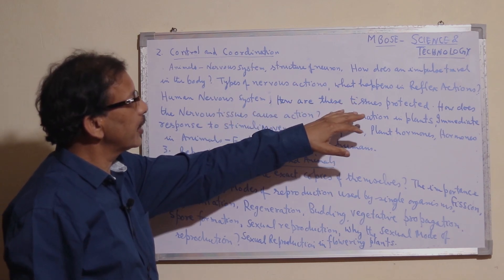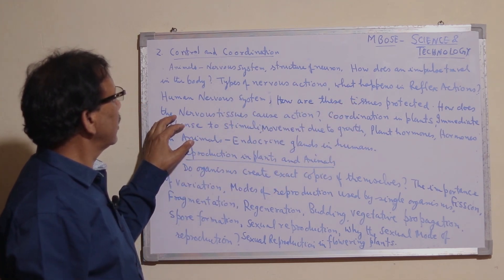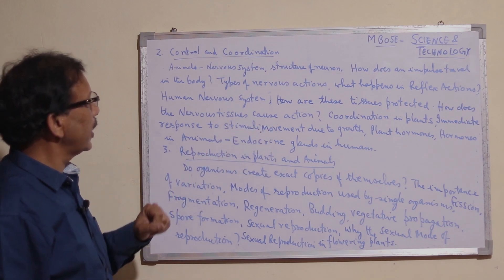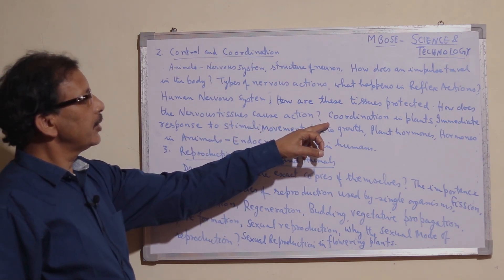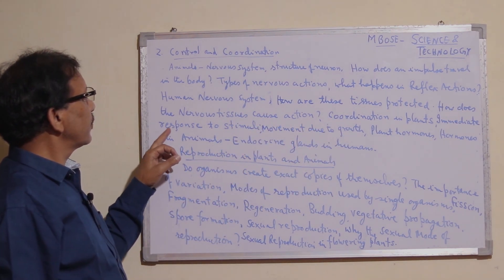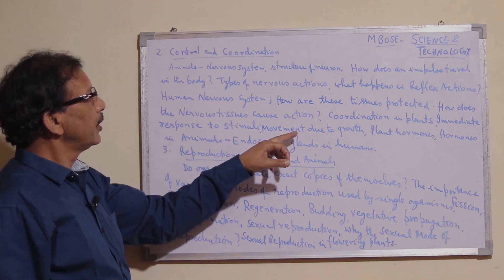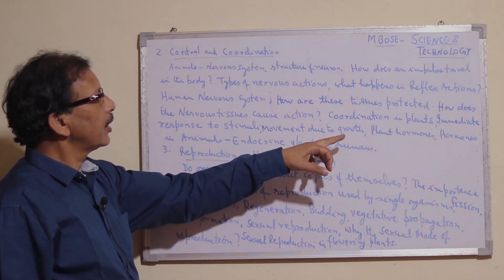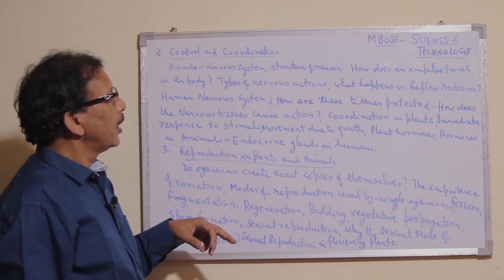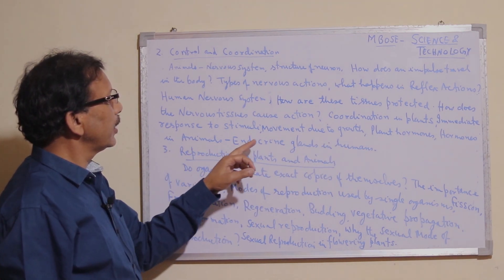We also study how these tissues are protected, how nervous tissue causes action, coordination in plants, immediate response to stimuli, movement due to growth, plant hormones, hormones in animals, and endocrine glands in humans.